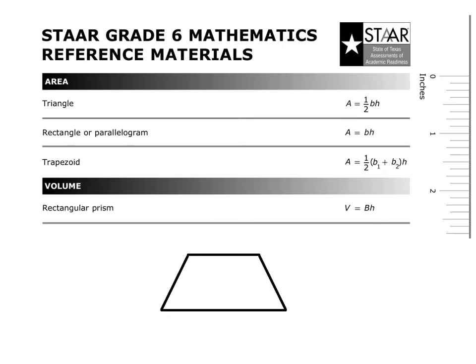Let's take a quick look at the reference sheets so you know where everything is. We have the area formulas: the triangle — one-half base times height, remember the height has to be vertical, it cannot be leaning. The rectangular parallelogram formula is A equals base times height, which also covers squares and rhombuses. Then we have the trapezoid formula: A equals one-half times (base 1 plus base 2) times height. Remember base 1 is on top, base 2 is on bottom, and the height must also be vertical from base 1 to base 2.